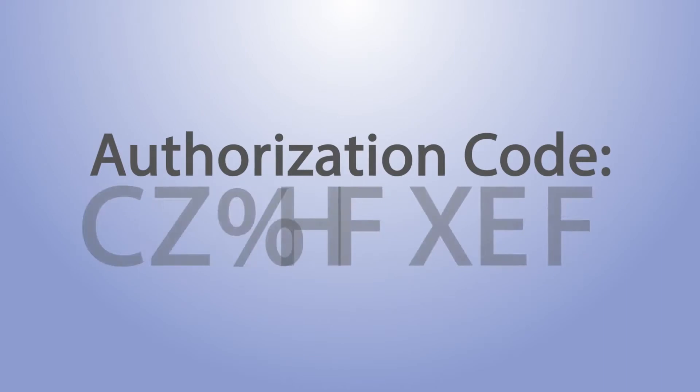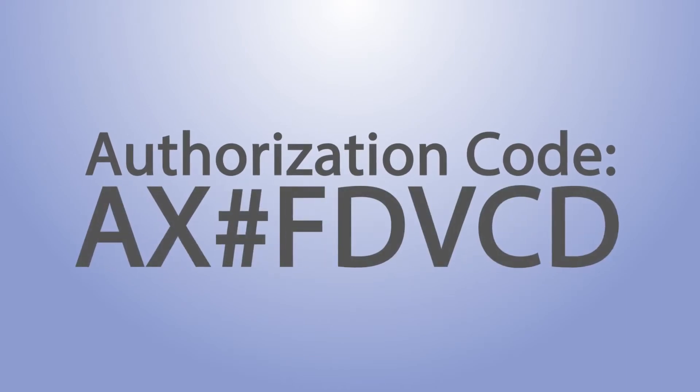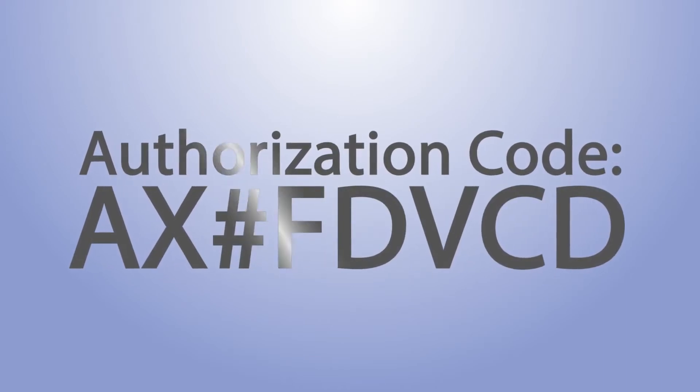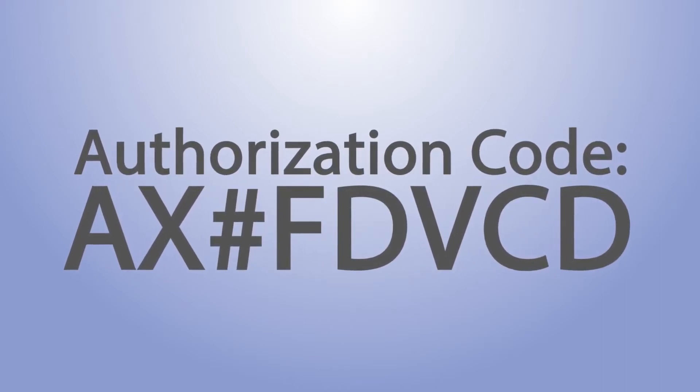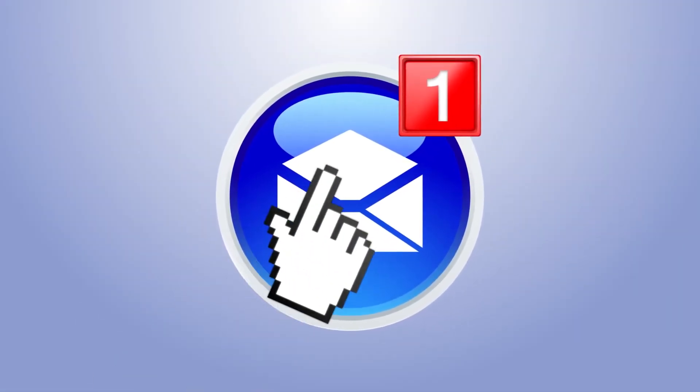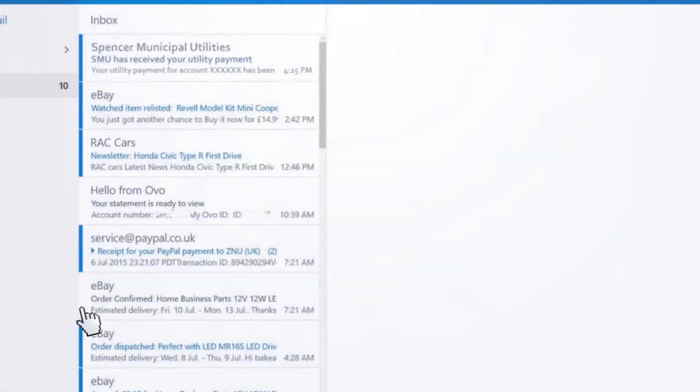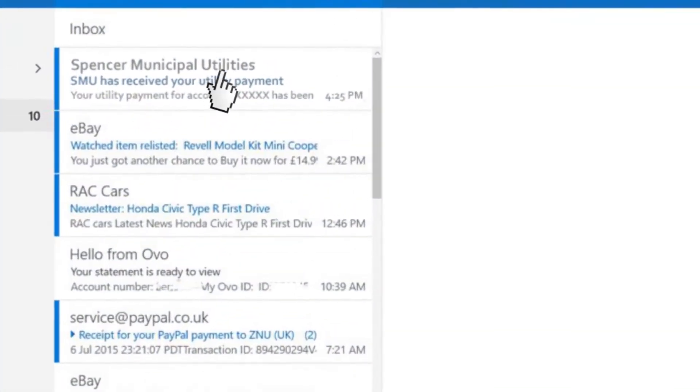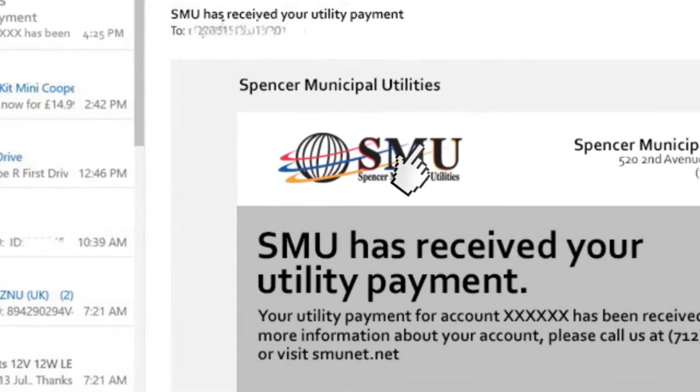To confirm the transaction, you'll receive an authorization code — make a note of it for your records if you'd like. Once SMU has received the payment, you'll also be notified by email with the email address set up on the account.